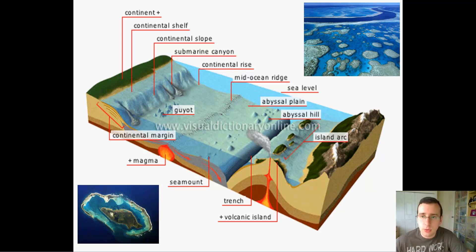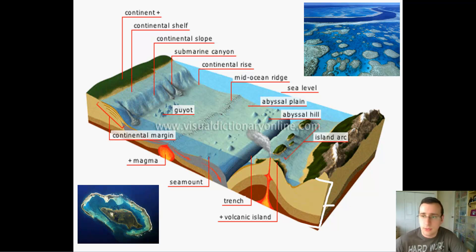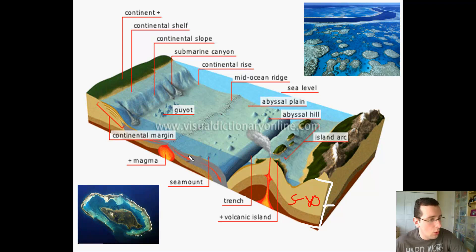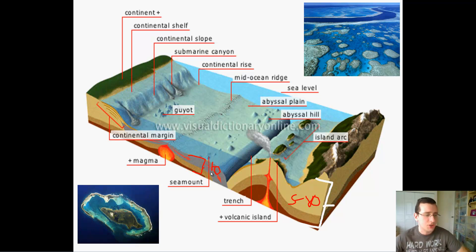The continental crust is the crust that sits underneath a continent. As you can see, it is very, very thick — it can be between 5 and 80 kilometers thick. Meanwhile, the oceanic crust is very thin compared to continental crust and is only ever 10 kilometers thick, much less thick than the continental crust.